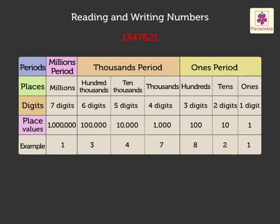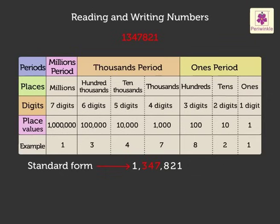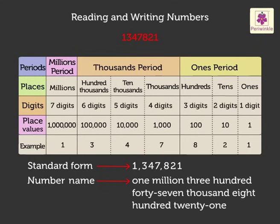So, we write the given number in standard form as 1,347,821 and we read it as one million, three hundred forty-seven thousand, eight hundred twenty-one. Its number name is written like this.